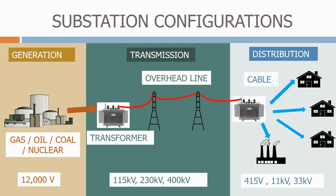Finally we have the distribution network. We step down the voltage using a transformer so that it can be used by industrial and residential customers. We normally transport the power through the distribution network using cables. The normal distribution voltages are 115 volts, 11 kV or 33 kV.